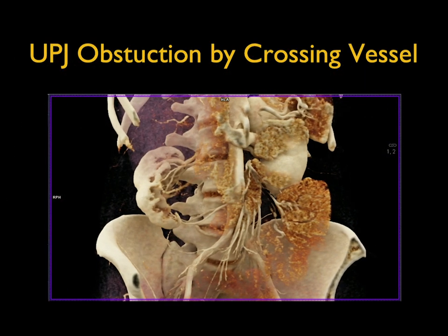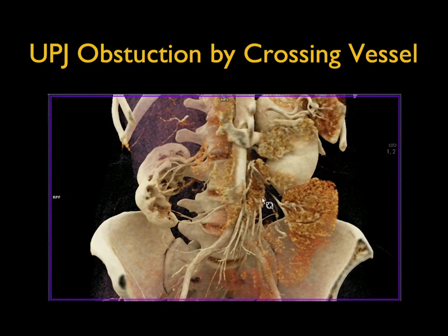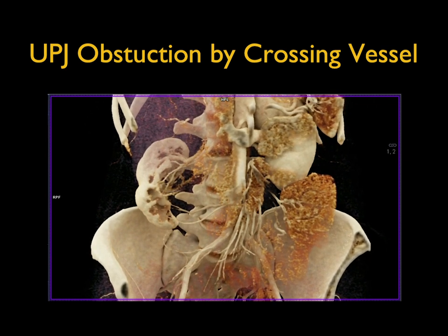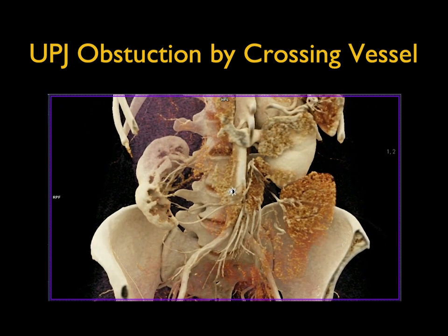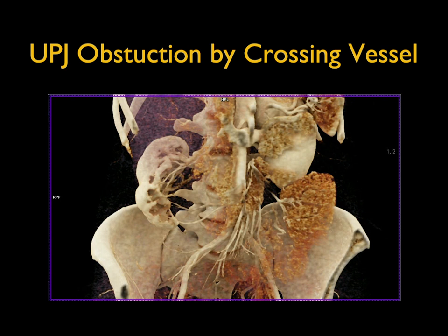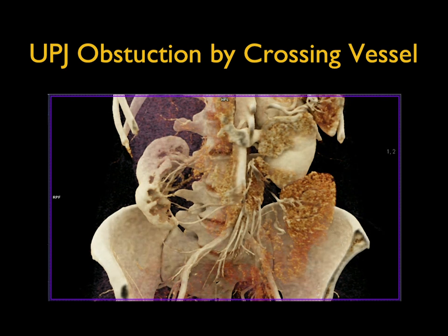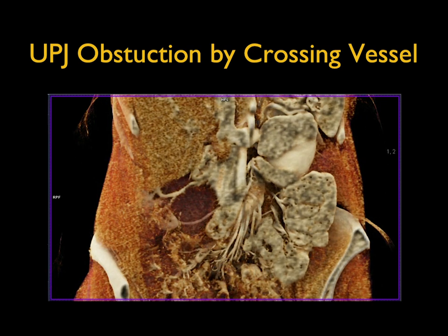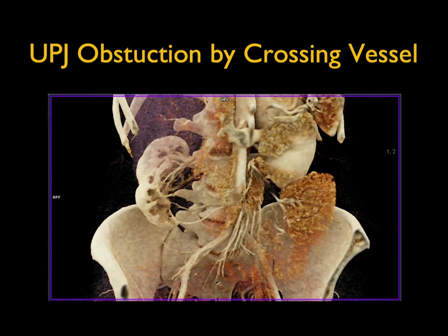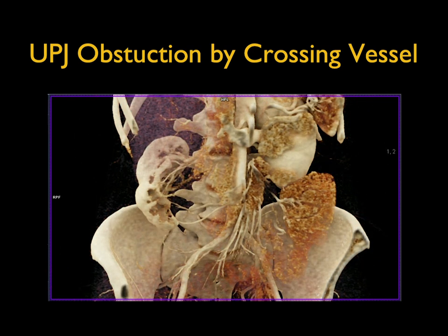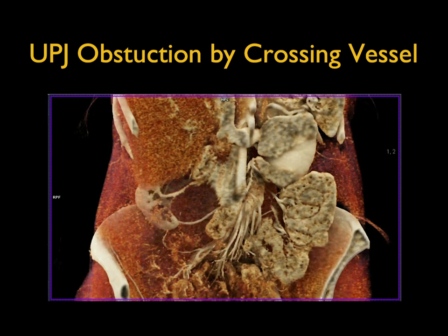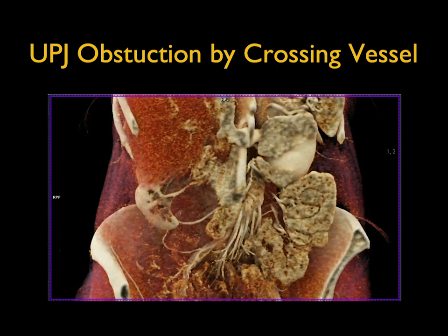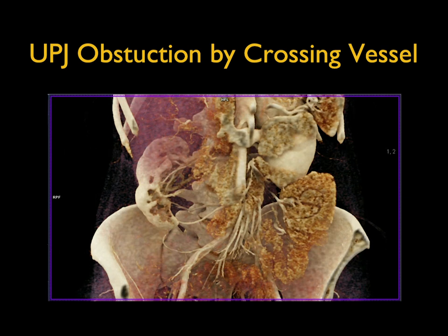You can see on the interactive views how nicely we see the kidney. The dilated pelvis is a negative process, and the multiple right renal arteries — including the renal artery that's causing the patient's compression and the UPJ obstruction, that crossing vessel — are clearly demonstrated. Here I'm analyzing this again with changing parameters.